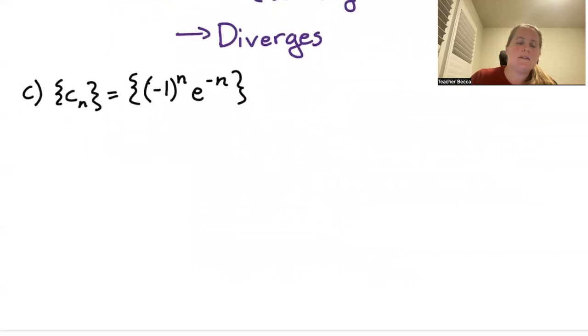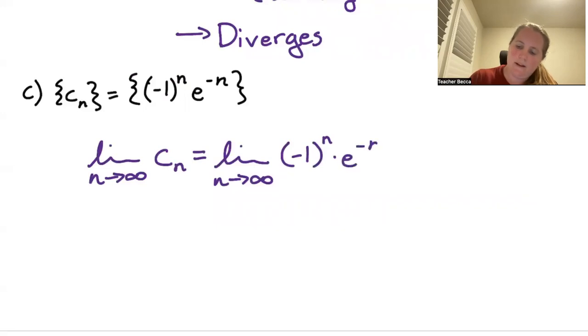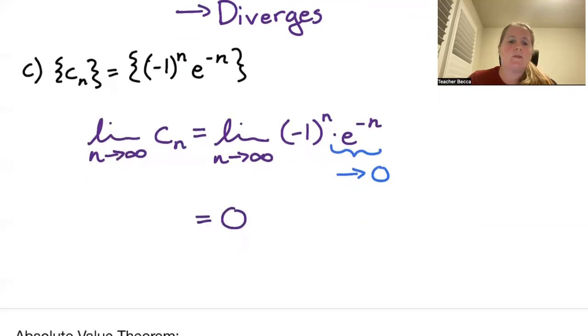Next up, let's look at c_n, which is defined by (-1)^n times e^(-n). e^(-n) goes to zero, and so our entire (-1)^n times that will go to zero. So this one converges as well.